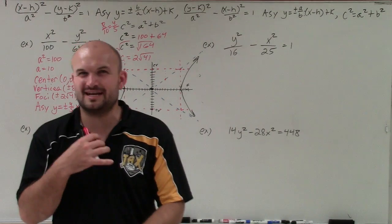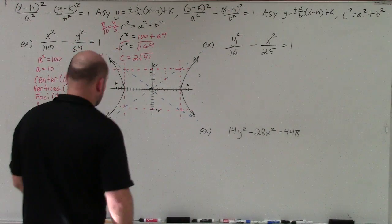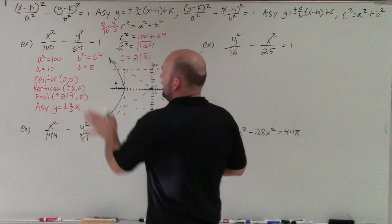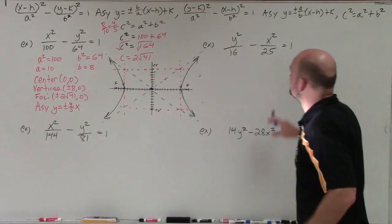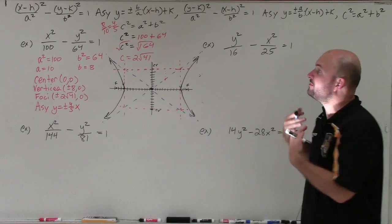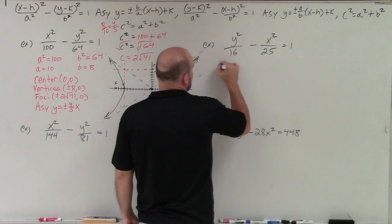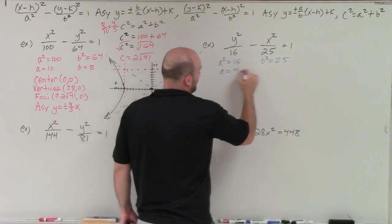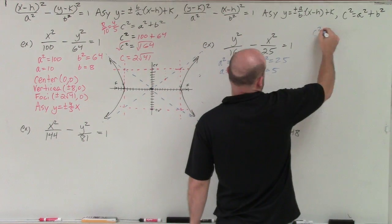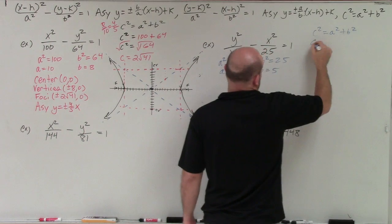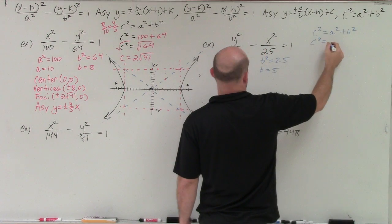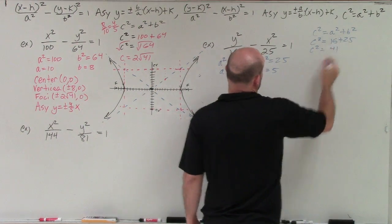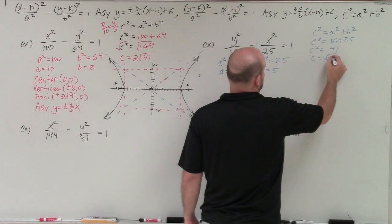For the next problem, here's the big thing students get wrong. They see 25 and call it a because they're thinking back to ellipses. Remember, it's always a squared minus b squared. So in this case, a squared equals 16 and b squared equals 25, meaning a equals 4 and b equals 5. Then c squared equals 16 plus 25, so c squared equals 41, and therefore c equals the square root of 41.